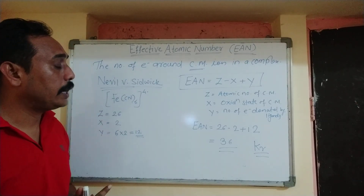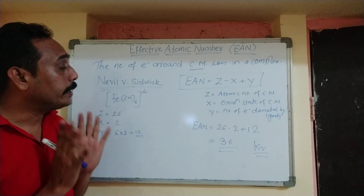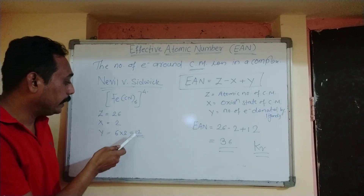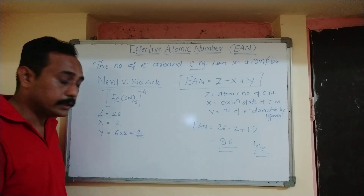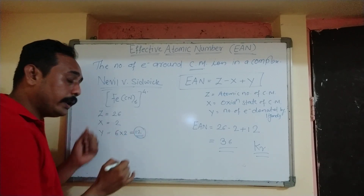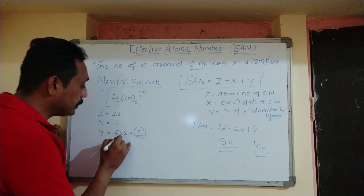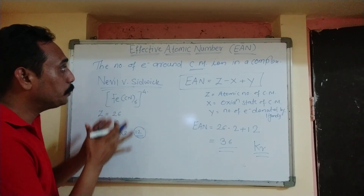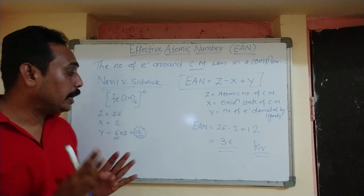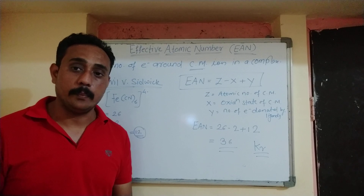What is the importance of Effective Atomic Number? The importance of Effective Atomic Number is to identify the number of ligands present in the complex. We know that each ligand donates 2 electrons; that's why with 12 electrons around, it has 6 ligands. So it helps to identify the number of ligands present in the given complex.